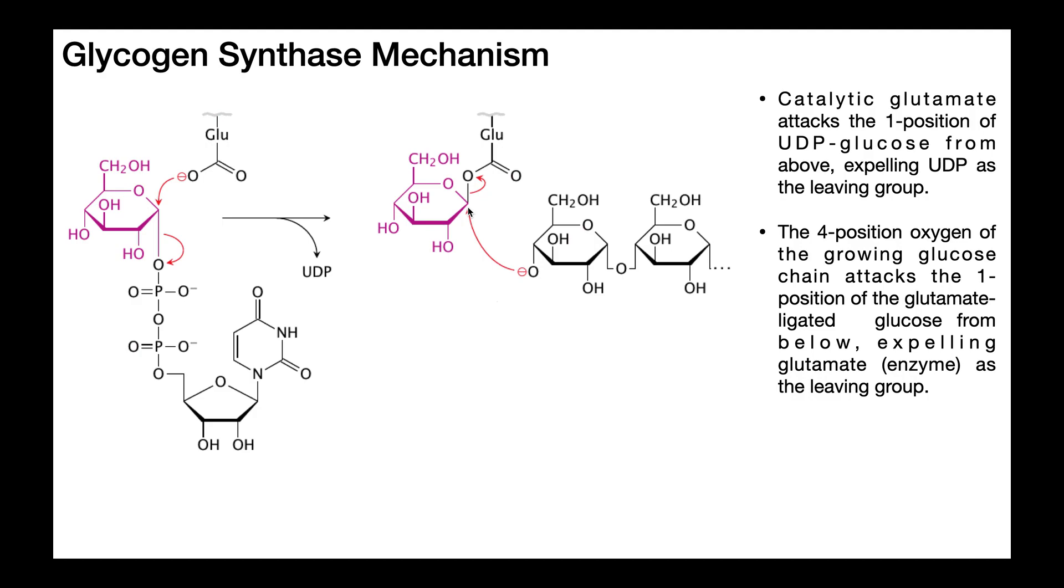That makes sense because the glutamate is now covalently bound from the top, and this is another SN2 type of mechanism. On this glucose, which was the terminal glucose of this glycogen branch,